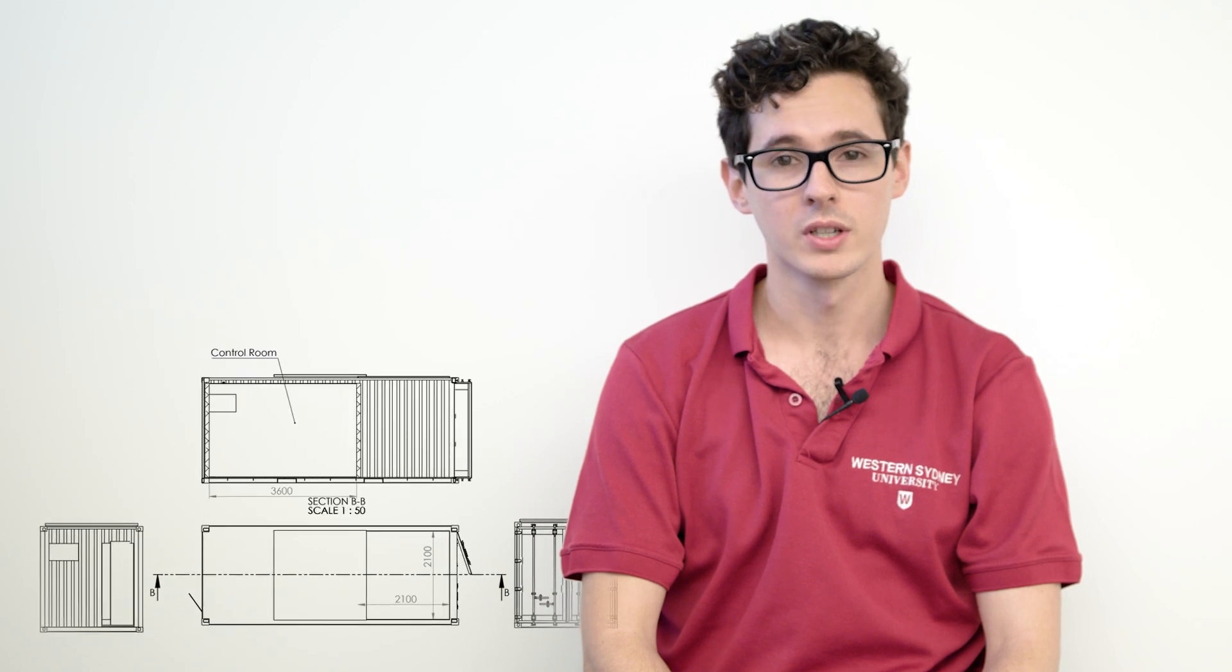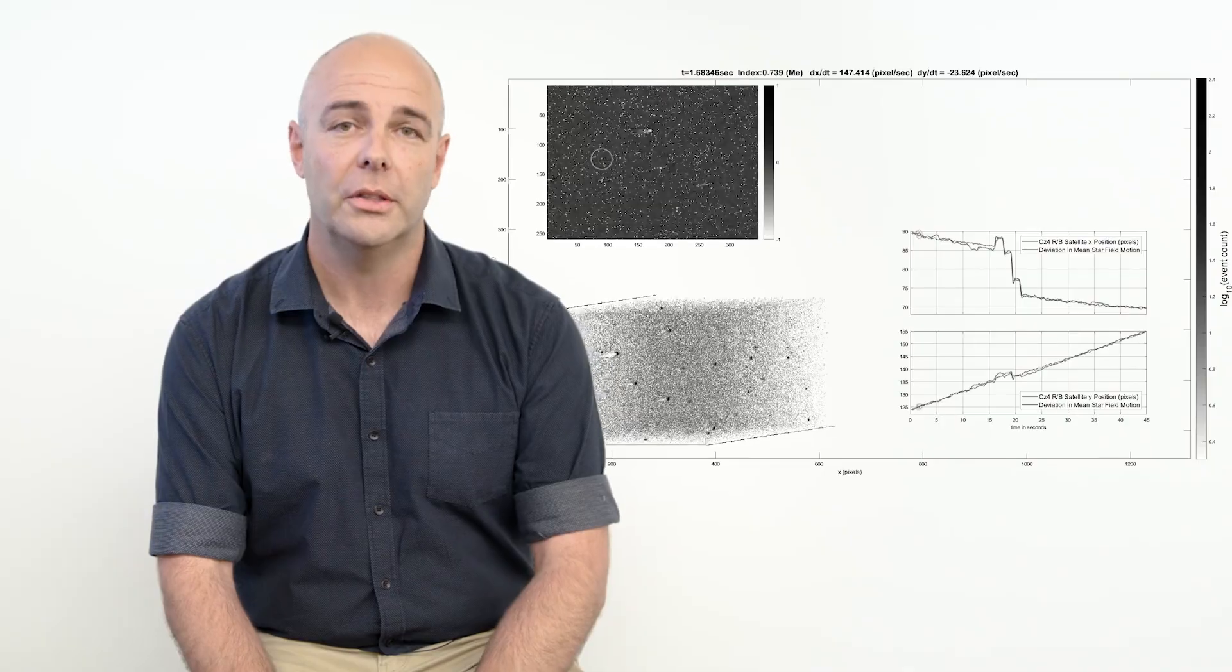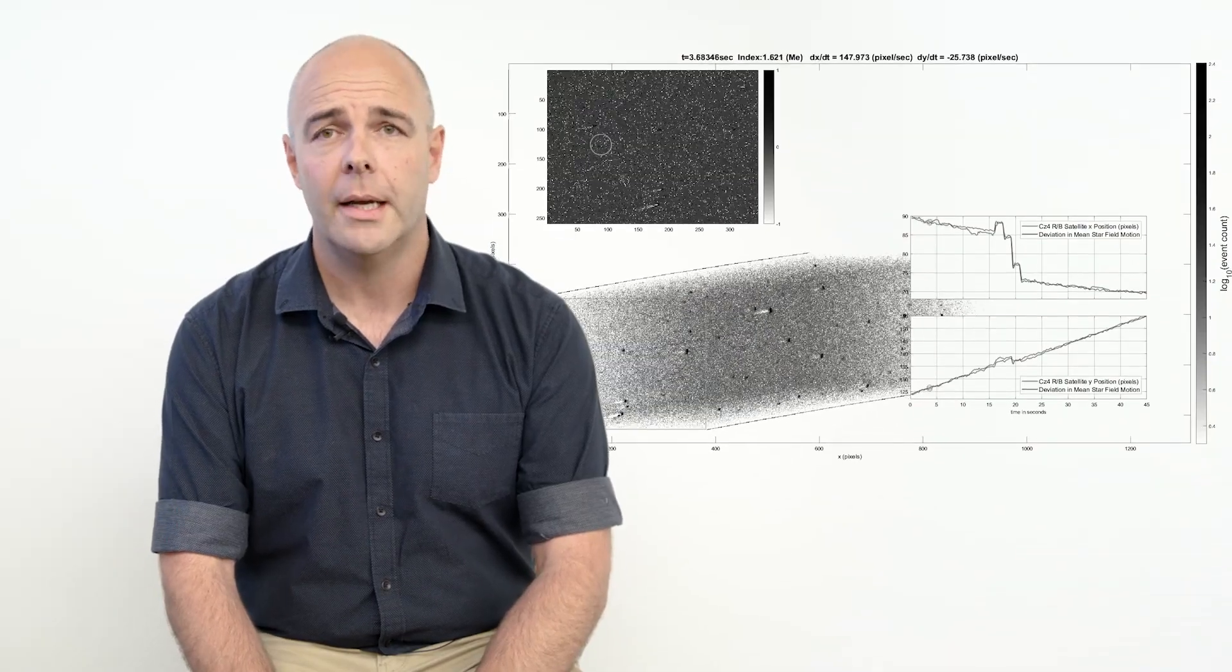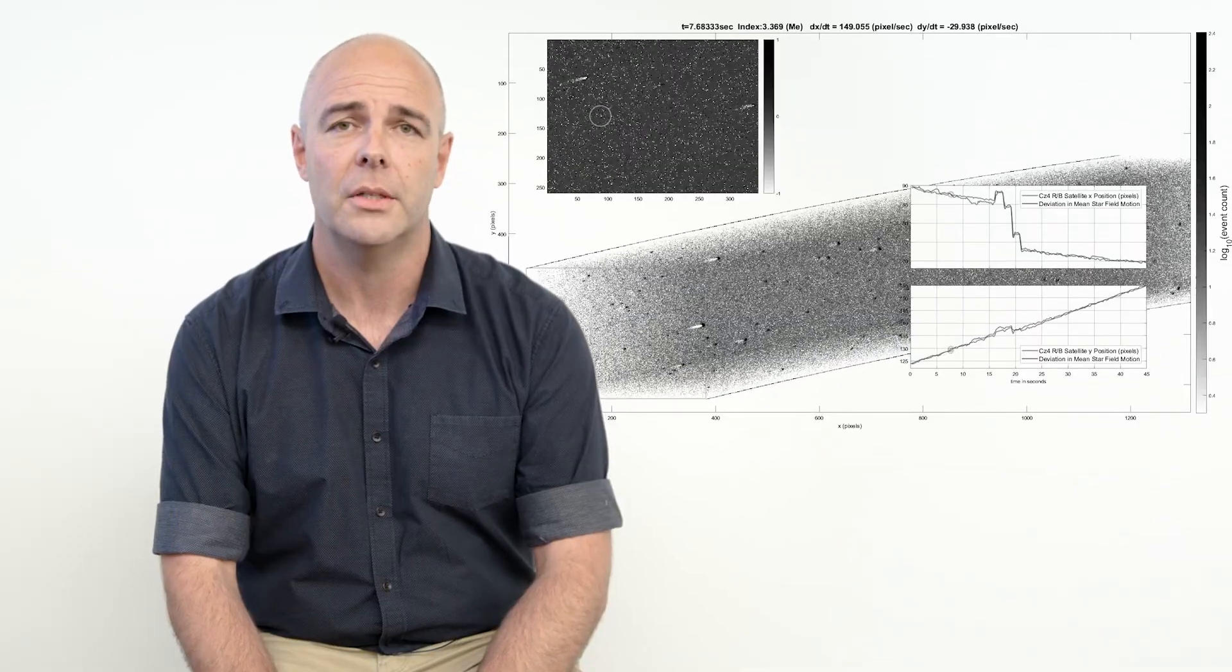So the EstroSite is a mobile observatory and it's where we're comparing conventional sensors that we would use in a typical telescope to the event-based cameras. That means that we can detect objects with exceptional sensitivity during the day and we don't need to truck around enormous amounts of data that might come from other sensing techniques.